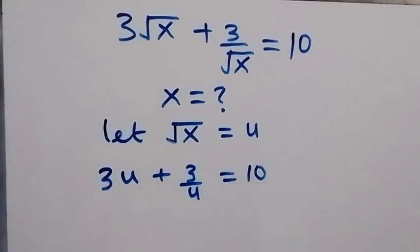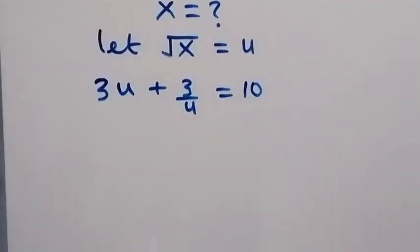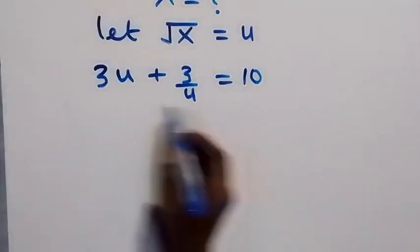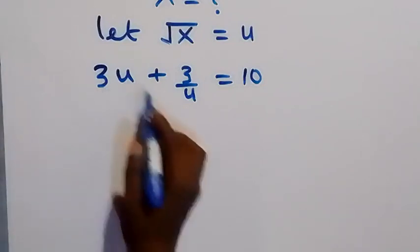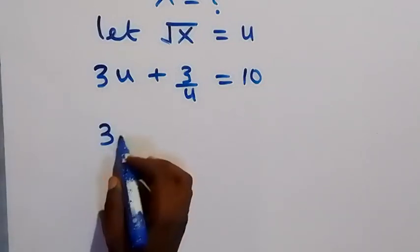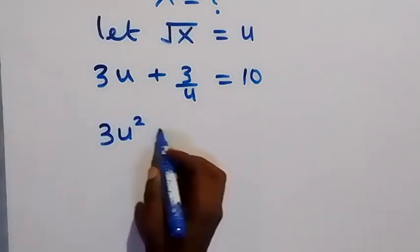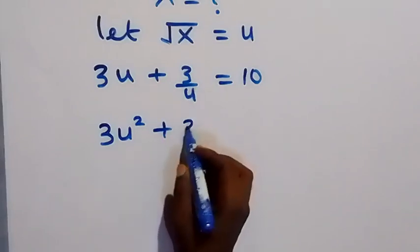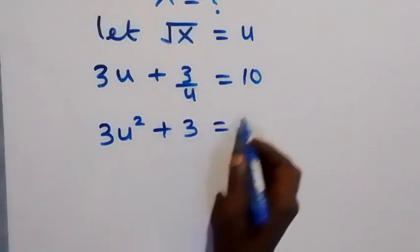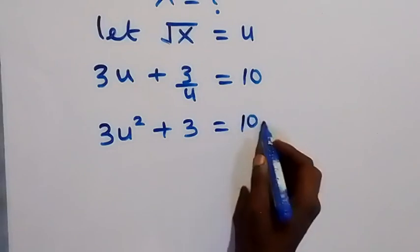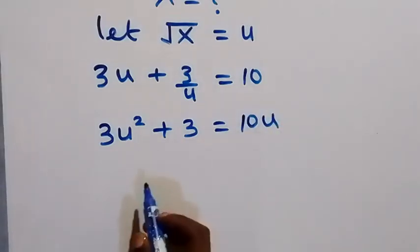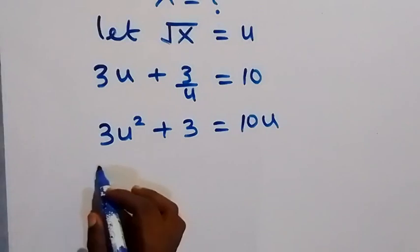From here we clear the fraction and multiply the entire equation through by u. When we multiply by u, u times 3u gives 3u², then u times 3/u gives 3, and u times 10 gives 10u.